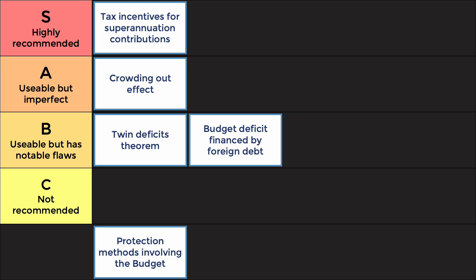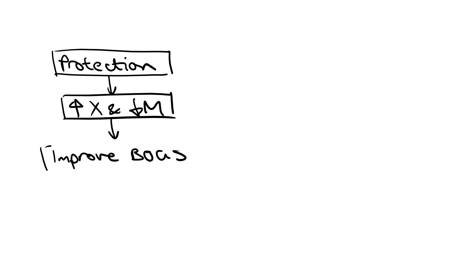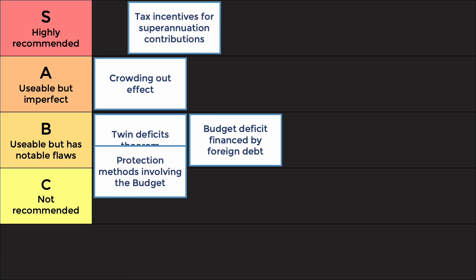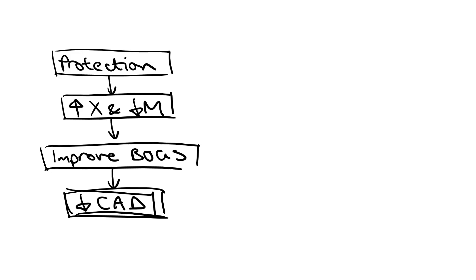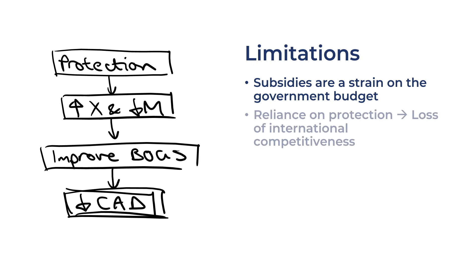The next S-tier point is that when the federal budget is used to protect industries, it improves the balance of goods and services and the current account. Protection methods like subsidies, tariffs, and export incentives involve the use of the federal budget, increasing export revenue and reducing import spending. This is S-tier because it's easy to explain — you can reuse protection concepts and examples from topic 1. You can also bring in the limitations for discuss, evaluate, or assess questions. For example, subsidies are a strain on the government budget, and they could reduce international competitiveness in the long term if domestic producers become reliant.